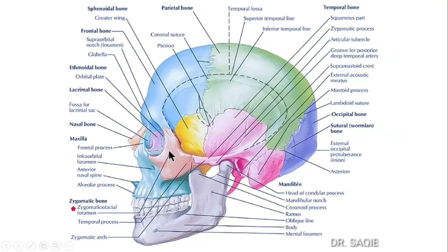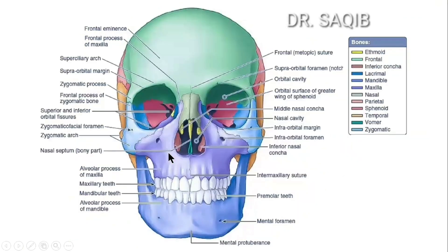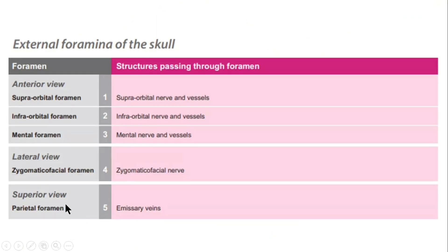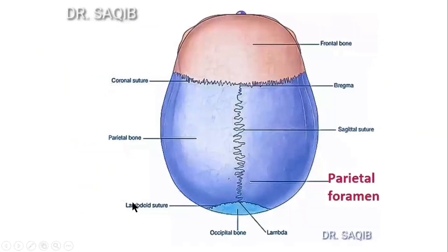In the lateral view, the zygomatic orbital foramen is present — follow the arrow. It passes the zygomaticofacial nerve. In the superior view, there is the parietal foramen, which passes emissary veins. You can see the parietal bones and the parietal foramen.